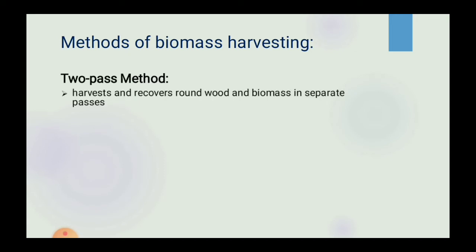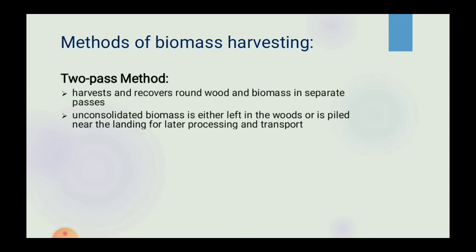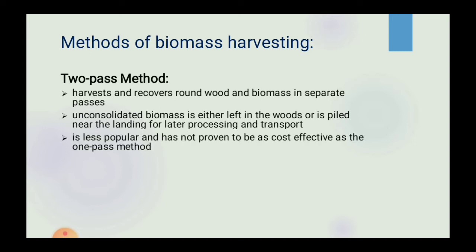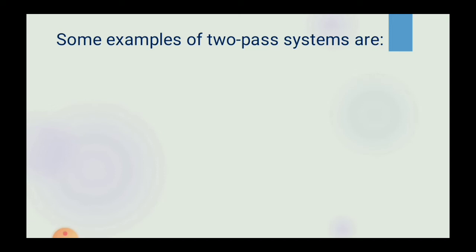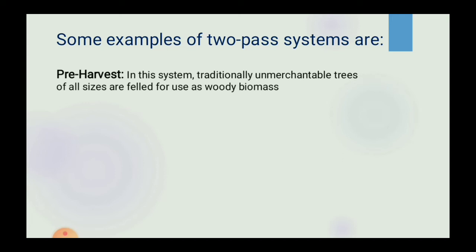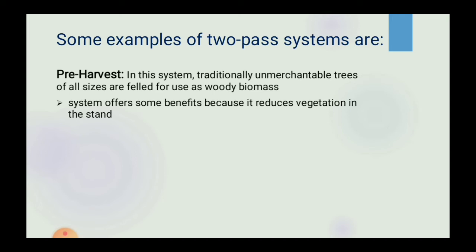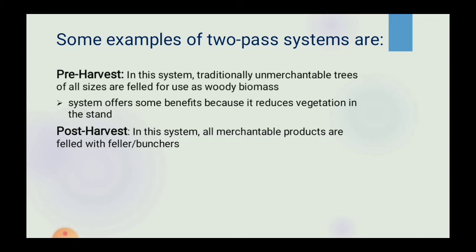Two-pass method: it harvests and recovers round wood and biomass in separate passes. The unconsolidated biomass is either left in the woods or piled near the landing for later processing and transport. It is less popular and has not proven to be as cost-effective as the one-pass method. Advantages: it offers the opportunity for smaller, specialized biomass harvesting contractors to operate. Examples include pre-harvest, where traditionally unmerchantable trees of all sizes are felled for use as woody biomass, and post-harvest, where all merchantable products are felled with a feller buncher.